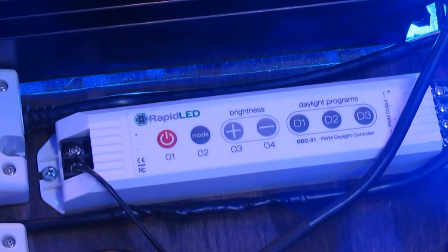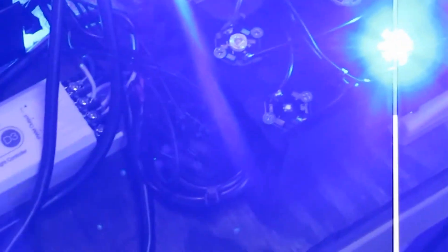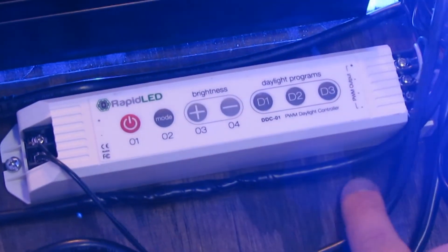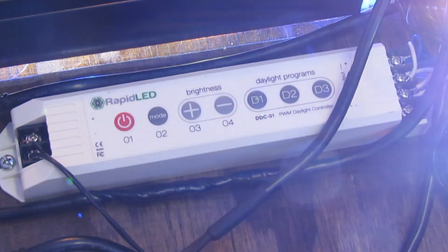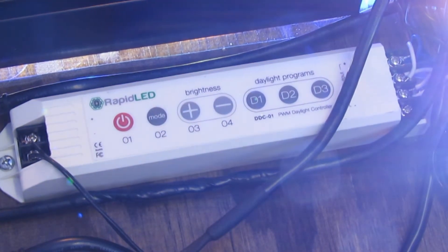And then by pressing the button once again, it will take me to the third channel, which I have is on blues. And then that's pretty much it right there. I press again and all the colors come on.